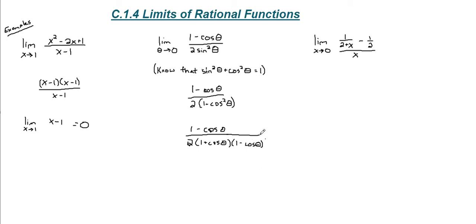Okay, and as we can see, one of these quantities cancels with the numerator, leaving us with 1 over 2 times 1 plus cosine theta.